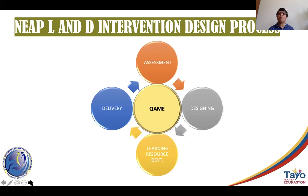The components of this design process are: assessment, designing, learning resource development, learning resource package development, and delivery — supported by quality assurance, monitoring and evaluation. These sub-processes are distinct but interrelated, sequential, and iterative, meaning it allows you to go back to the processes, reflect, and continue to improve. That is reflected in the cyclical nature of this model.